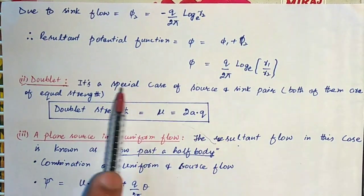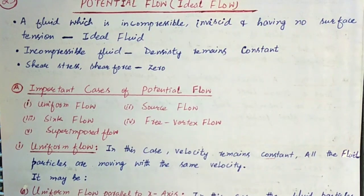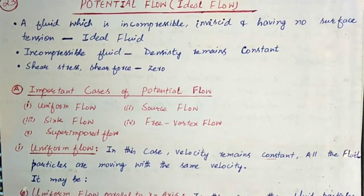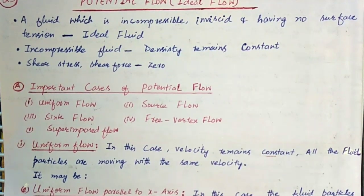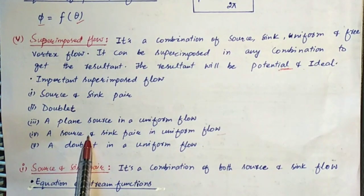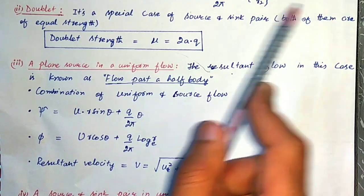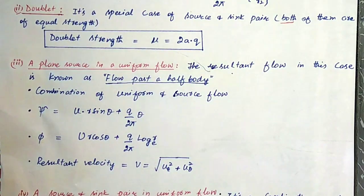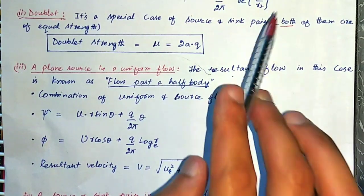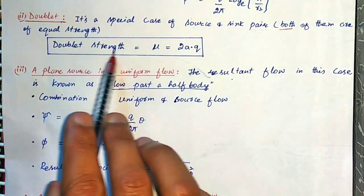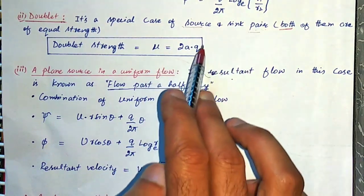Next is the doublet, which is a special case of source and sink pair where both have equal strength — this is an important point from the examination point of view. In a regular source and sink pair, the strengths are unequal, but in a doublet, source and sink flow have equal strength. The doublet strength is represented by mu, equal to 2 multiplied by a multiplied by Q, where a is the distance between the source and sink pair.